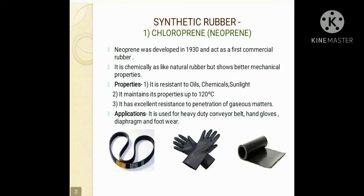Neoprene shows the following properties. First, it is resistant to oils, chemicals, and sunlight. Another property is that this material maintains its characteristics at temperatures up to about 120 degrees Celsius. Third, it has excellent resistance to penetration of gaseous matter, meaning gases do not percolate through neoprene products. It is used for making heavy duty conveyor belts, hand gloves, diaphragms, and footwear.